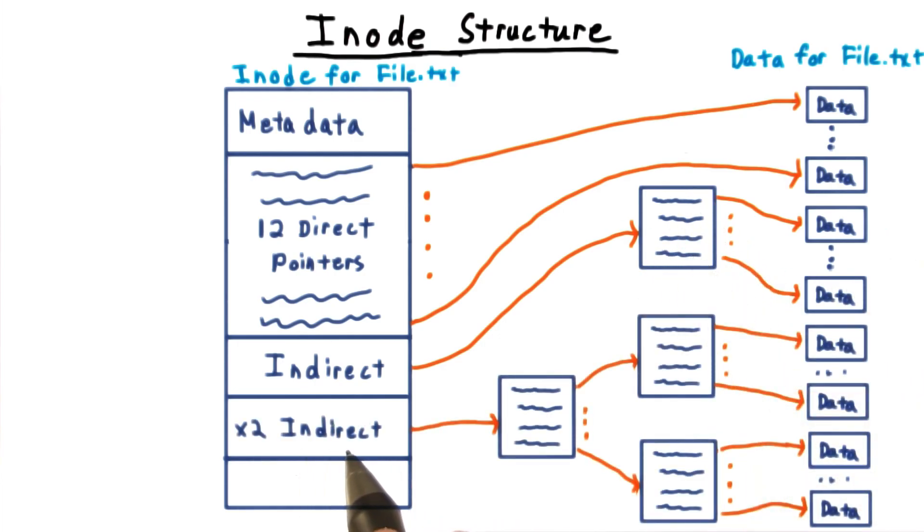If this doesn't give the file enough space, then we use the 14th pointer with not one, but two layers of indirection, giving us even more space. And if this isn't enough, we have a 15th pointer which uses triple indirection for more space still.